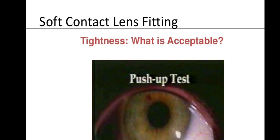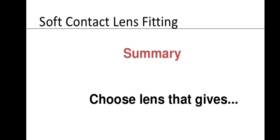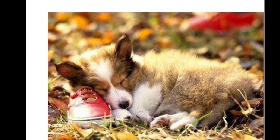The push-up test involves placing the index finger at the lower lens margin and pushing upward to assess lens movement. A tight lens compresses the sclera, visible as perilimbal vessel compression. The ideal lens gives proper vision with equal pre- and post-blink visual acuity, equal pre- and post-blink retinoscopy reflex, equal pre- and post-blink keratometry mires, no lag, no decentration, and patient comfort.